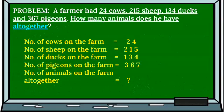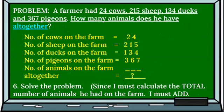Our statement: Number of cows on the farm — 24. Number of sheep on the farm — 215. Number of ducks on the farm — 134. Number of pigeons on the farm — 367. What are we required to find out? The number of animals on the farm altogether. That word 'altogether' is a clue word — one of those terms used for addition. So now we are going to solve. Since we must calculate using the keyword 'altogether,' I must add.